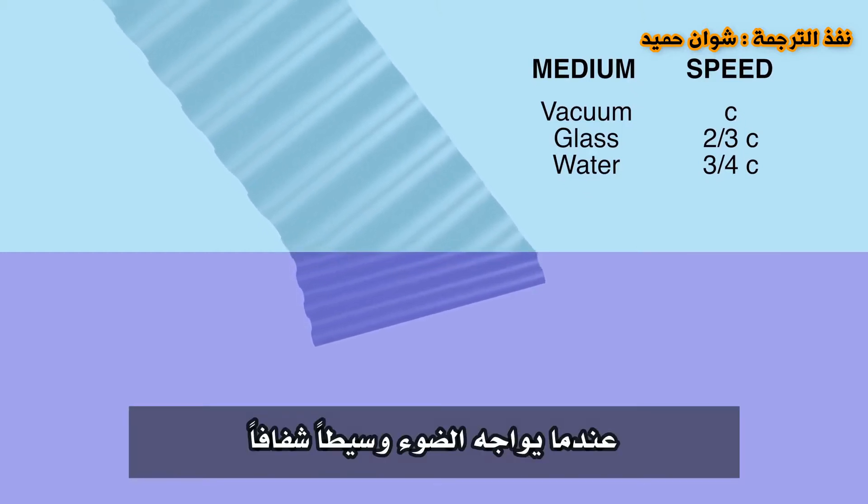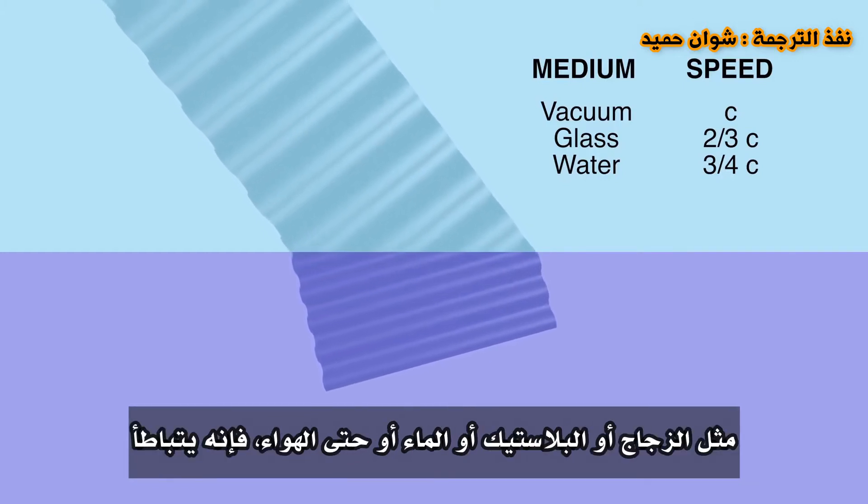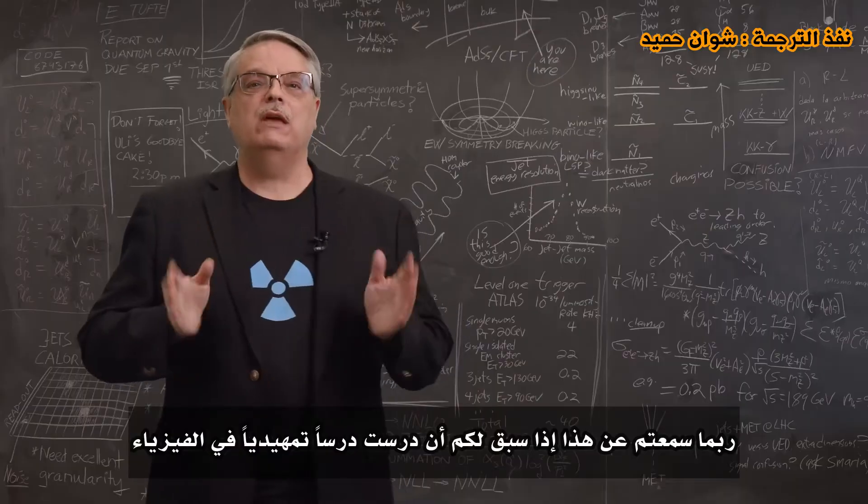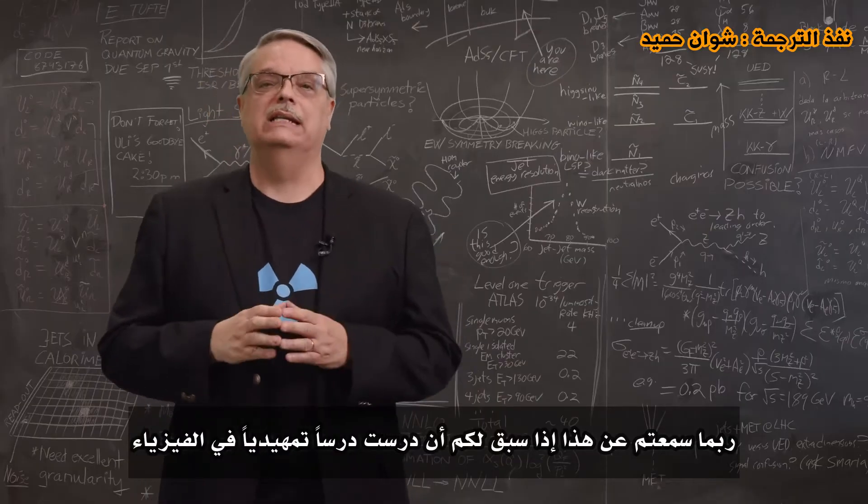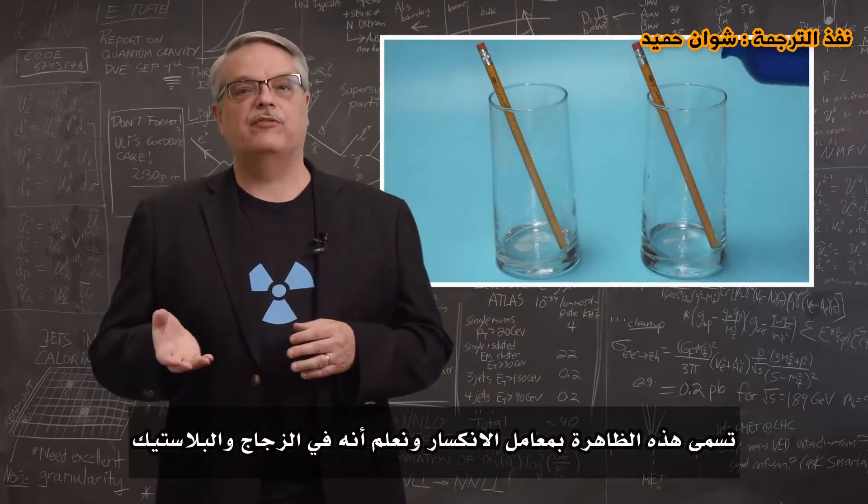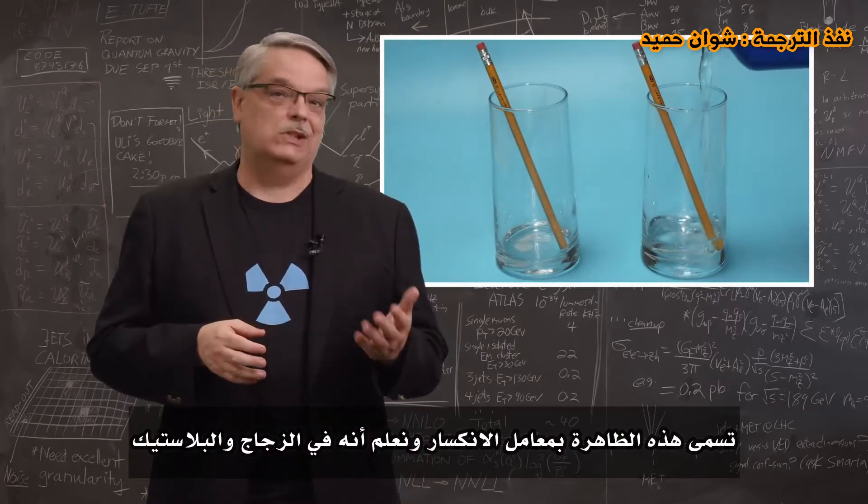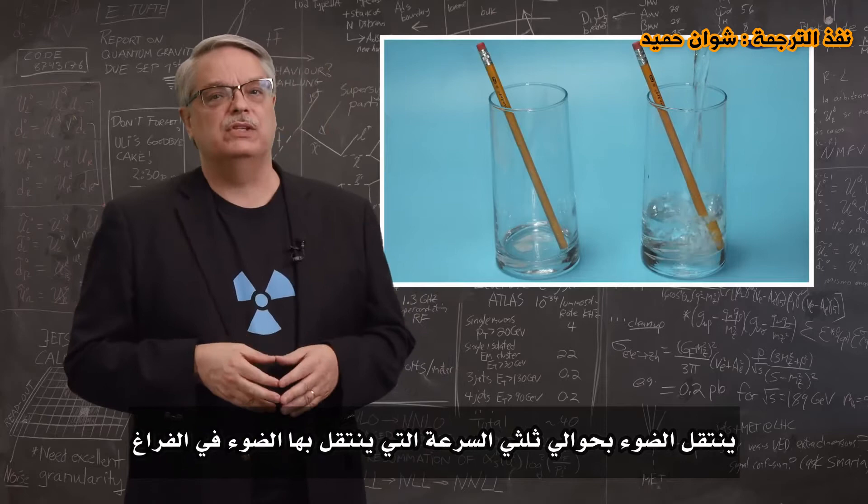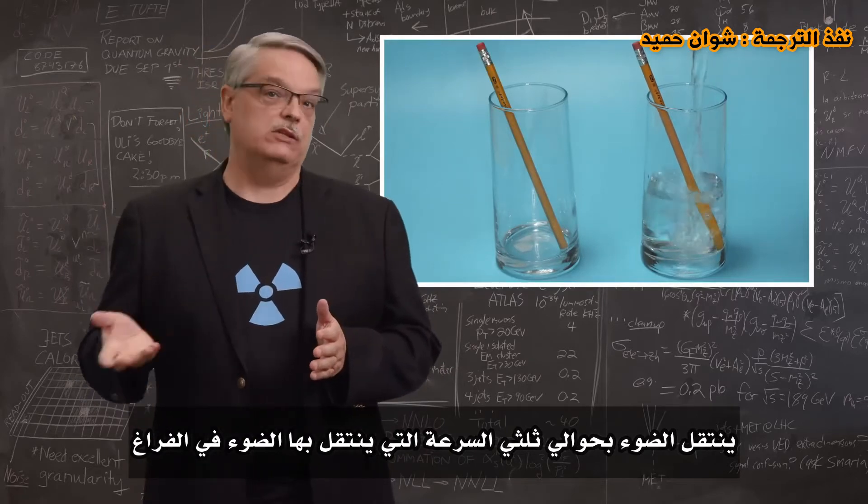When light encounters a transparent medium like glass, plastic, water or even air, it slows down. You may have heard of this if you ever took an introductory physics class. The phenomenon is called the index of refraction and we know that in glass and plastic, light travels at about two-thirds the speed that light travels in a vacuum.